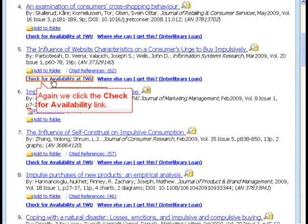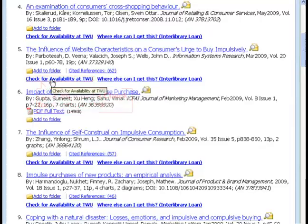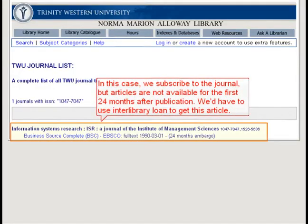We return to our results list and again click the Check for Availability link. In this case, we subscribe to the journal, but articles are not available for the first 24 months after publication. We'd have to use Interlibrary Loan to get this article.